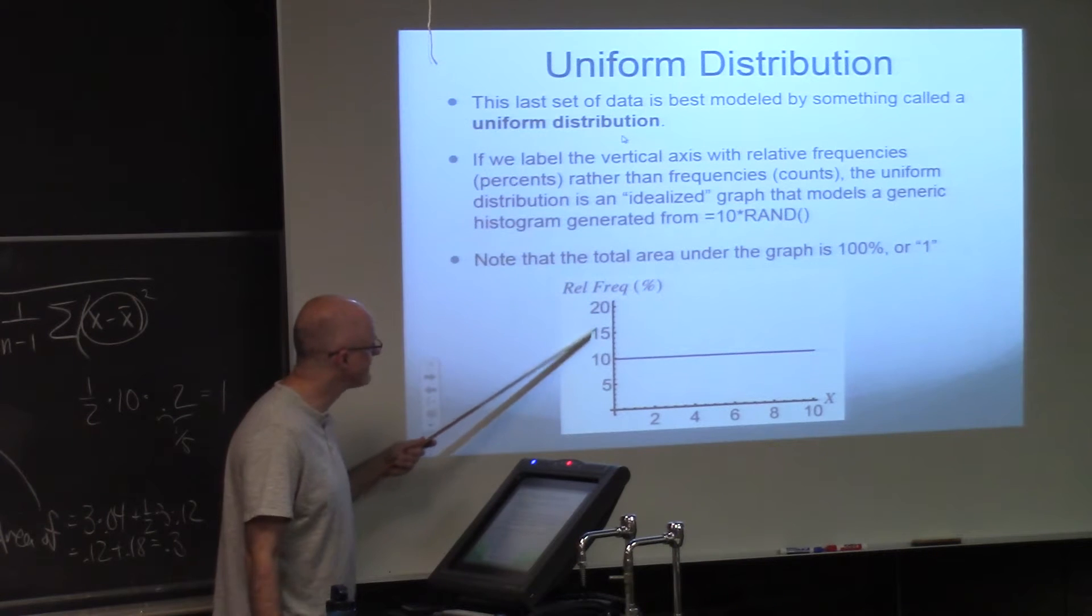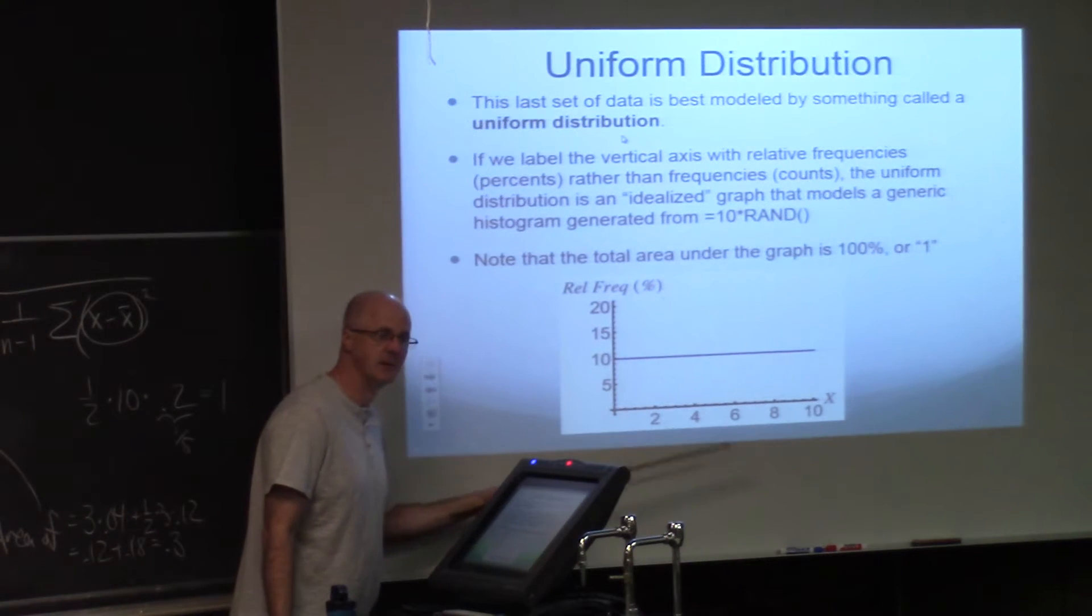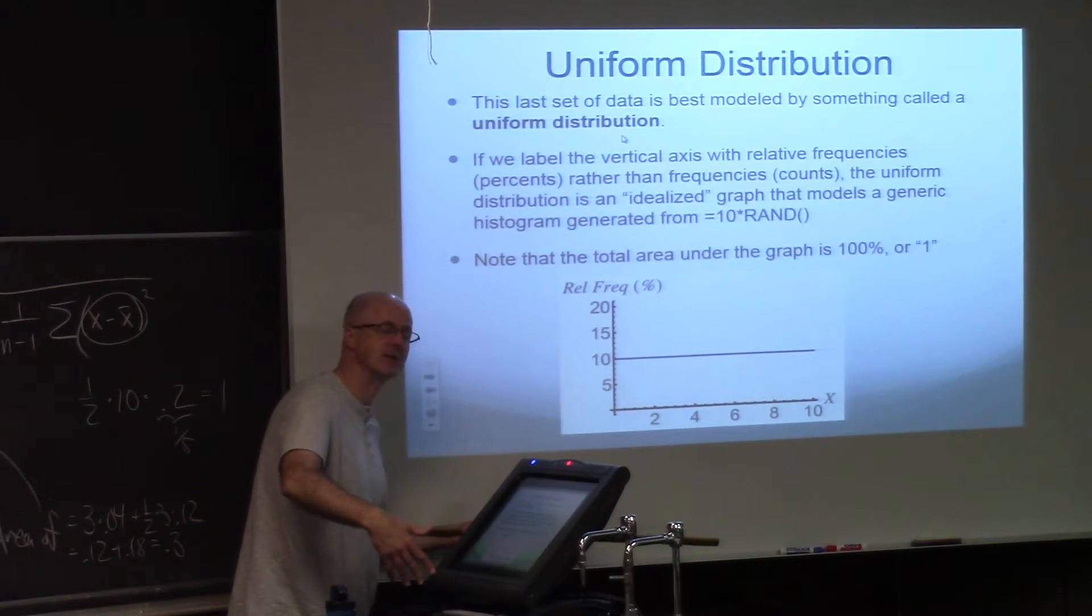If this was a decimal form over here, this would be a 0.2, this would be a 0.1. The area would be three times 0.1 is 0.3, which would convert back to a percentage of thirty percent again.